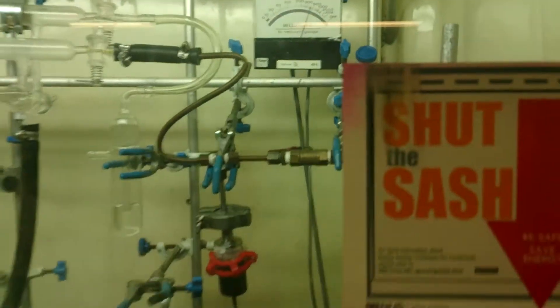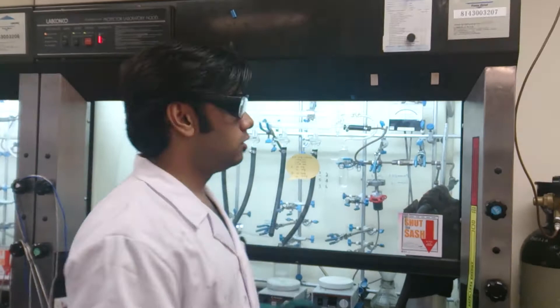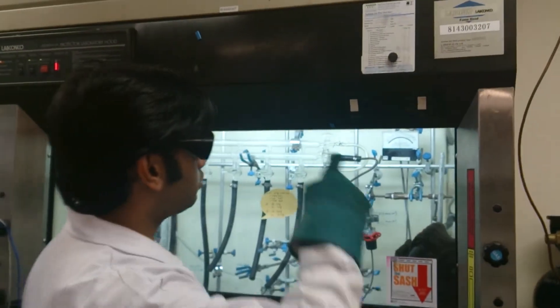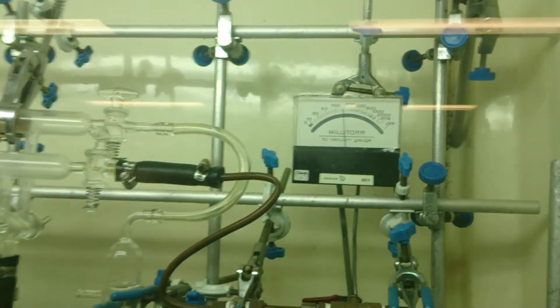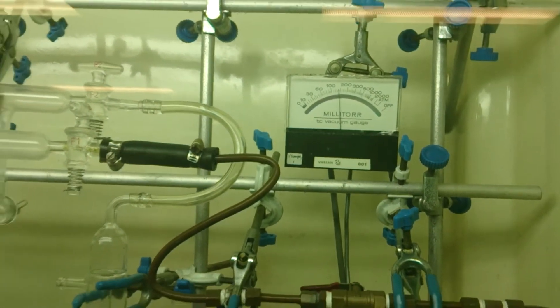So this is pretty much the setup. It's part of the cold trap. So now as we can see that the vacuum has gone down to less than 150 millitorr as I said before. So now I will take out the cold trap and show you how it is done.